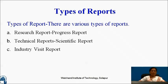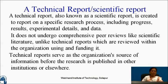Types of reports: there are various types — research report, technical reports, scientific reports, and industry visit report. A technical report, also known as a scientific report, is created to report on a specific research process including progress, results, experimental details and data. It does not undergo comprehensive peer reviews like scientific literature; unlike scientific reports, technical reports are reviewed within the organization using and funding it. Technical reports serve as the organization's source of information before the research is published in other institutions or elsewhere.